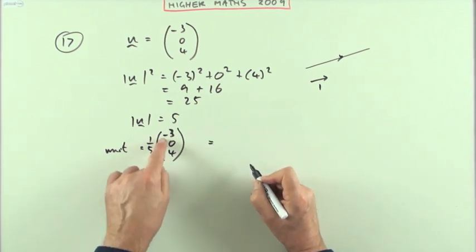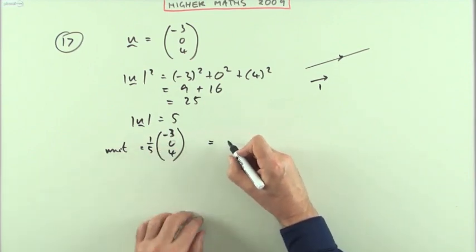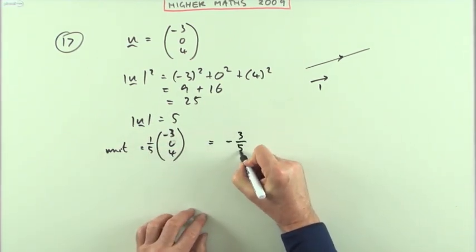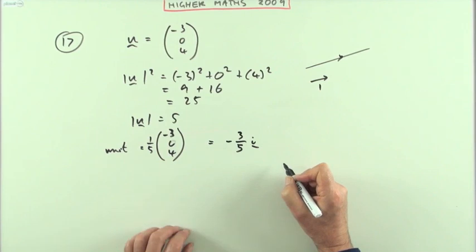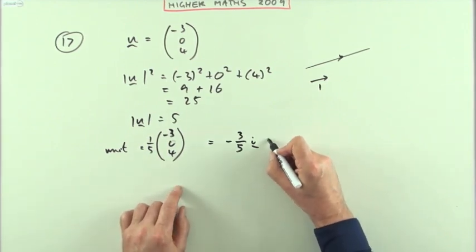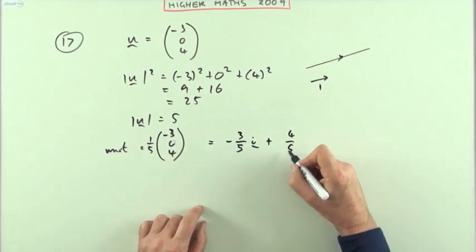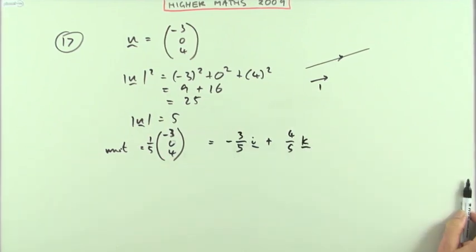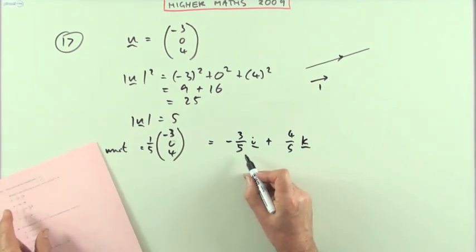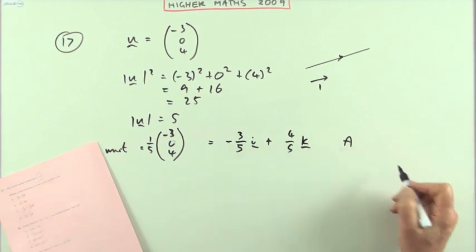Well that means I've got negative three-fifths for the x component so it's negative three-fifths of i, nothing for the y component. One-fifth of four, so that's plus four-fifths of the z component which is four-fifths of k. And that particular one gives me the answer negative three-fifths i plus four-fifths k which is a.